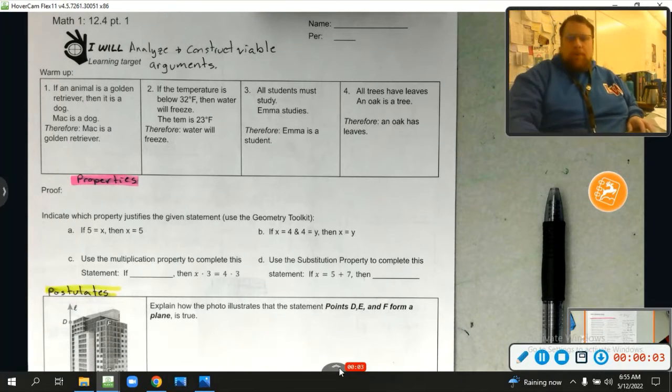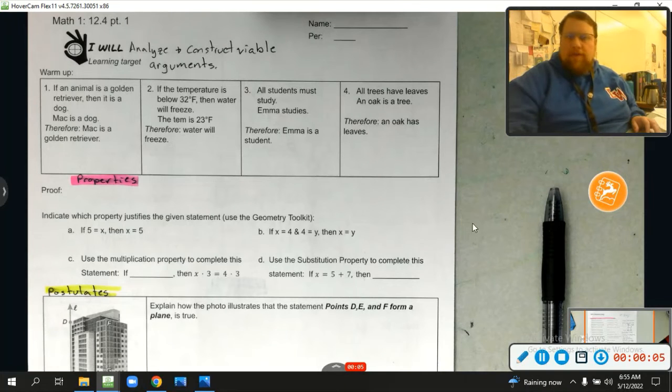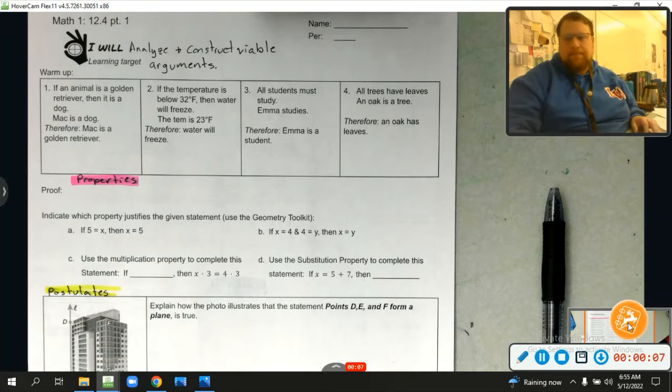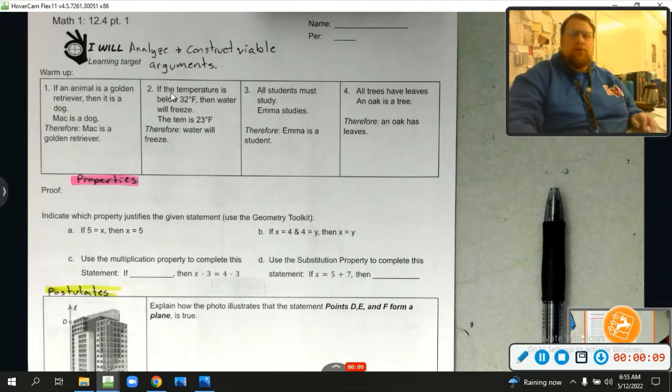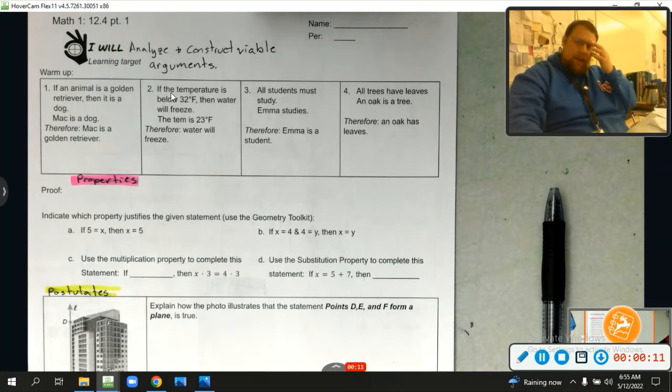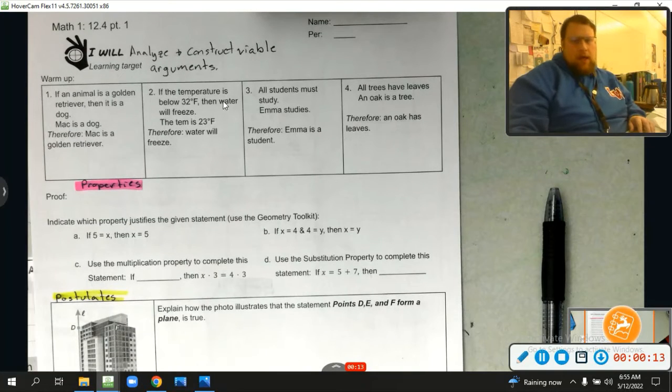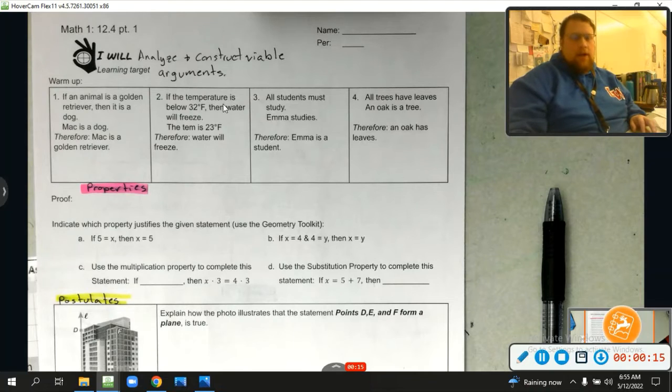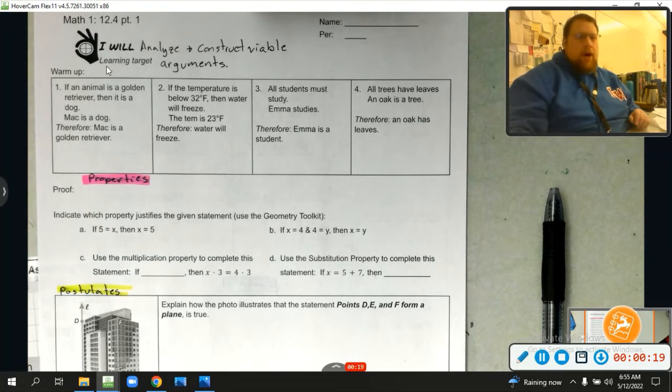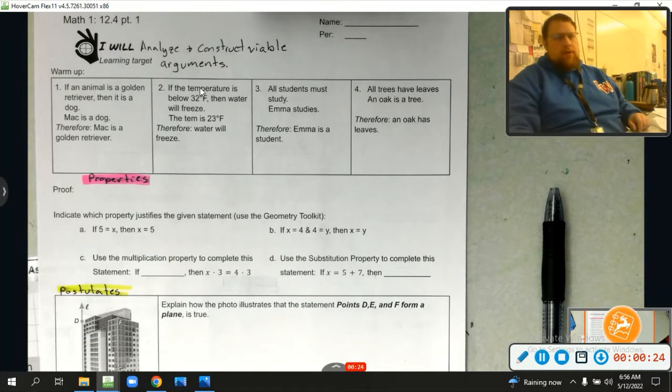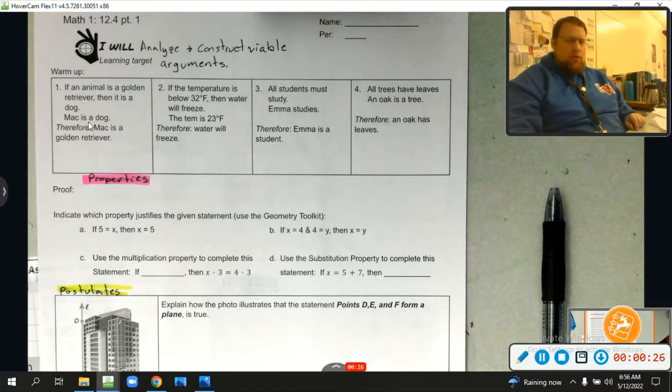What up, athletes? This is 12.4 part one. We'll be using this in conjunction with our toolkit, which is the above video, or below if you're looking at it on YouTube. Our learning target today is I will analyze, construct viable arguments. Go ahead and write that down. Then take a minute and look at the warm-up.